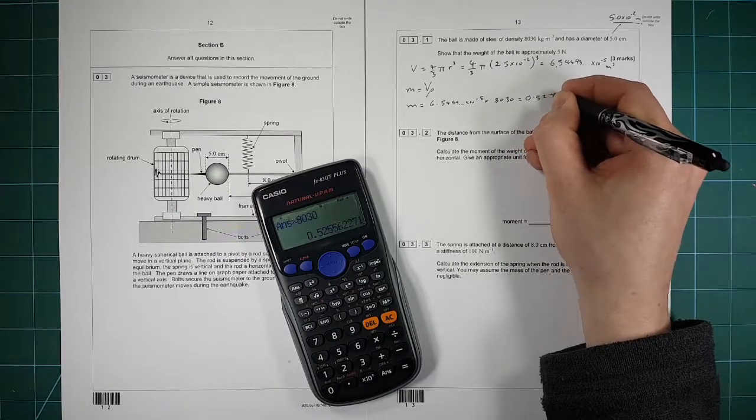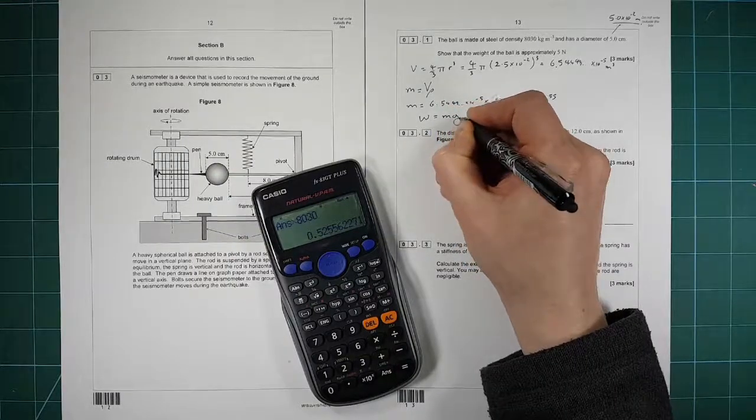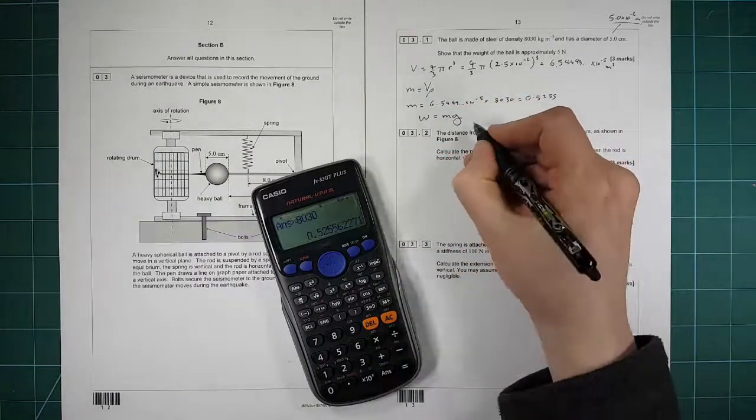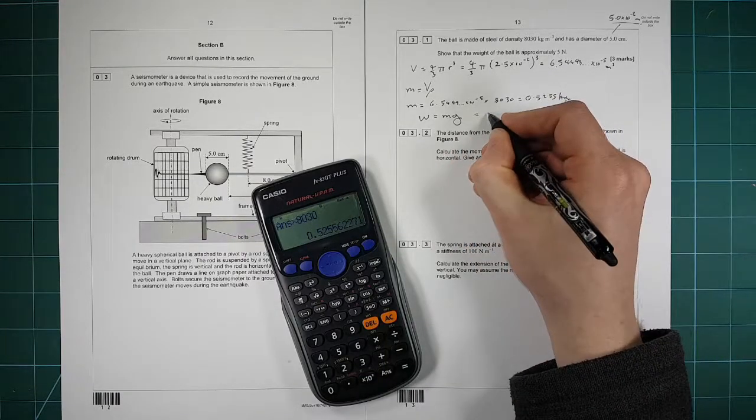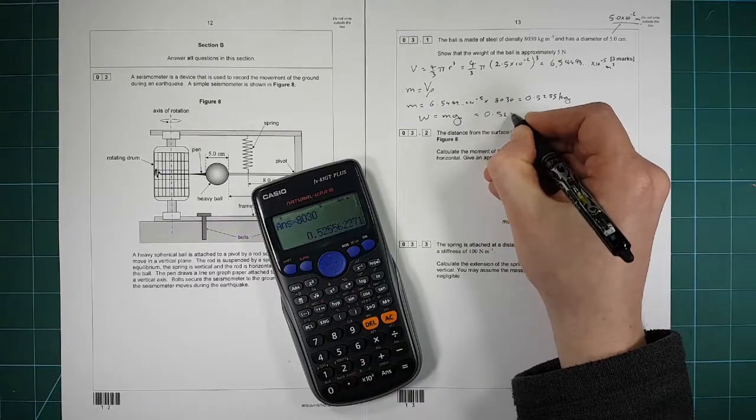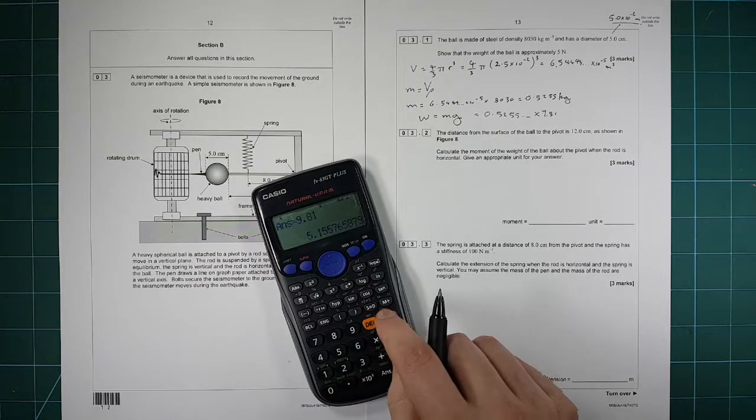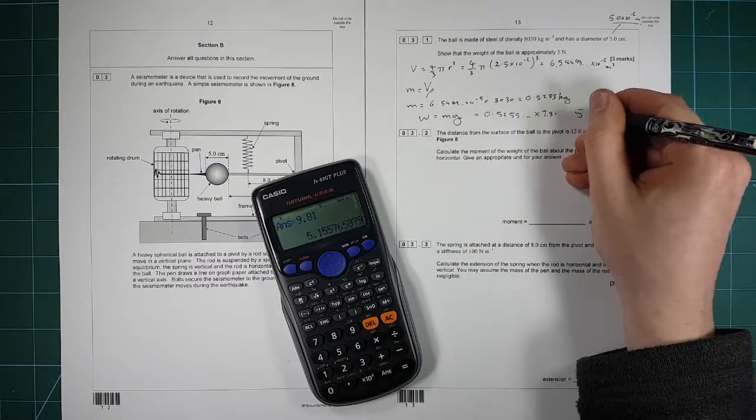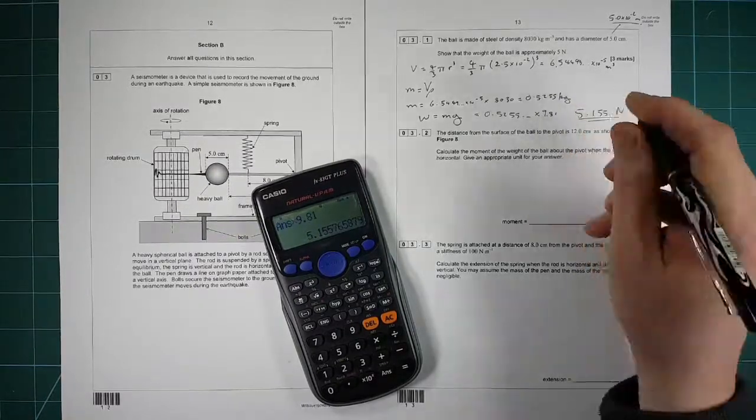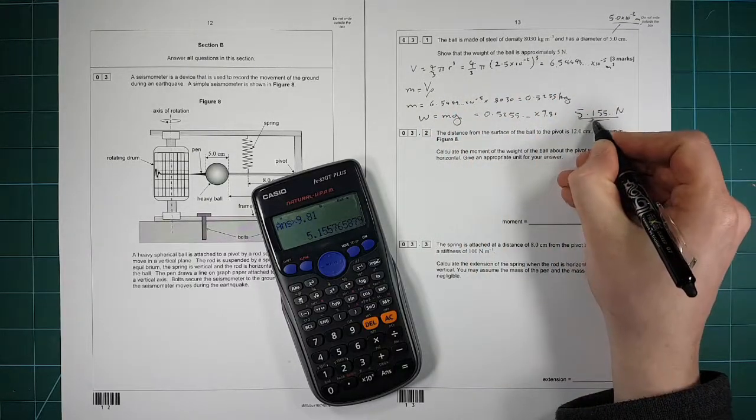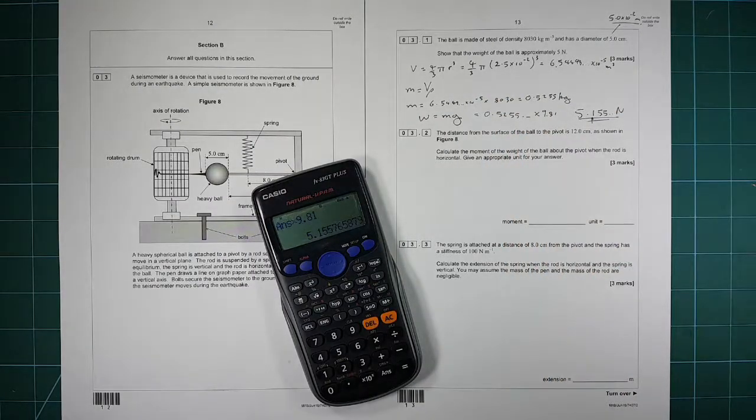So 0.5255, and then w is equal to mg, the weight of something, mass times gravity. So that's in kilograms. I need to write my units. 0.5255 dot dot dot times by 9.81 gives us 5.155 newtons. And it's a show that question, so you always have to write it to at least one more decimal place than they give it there.